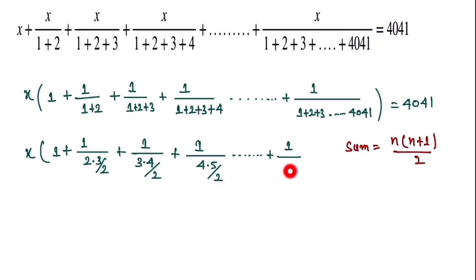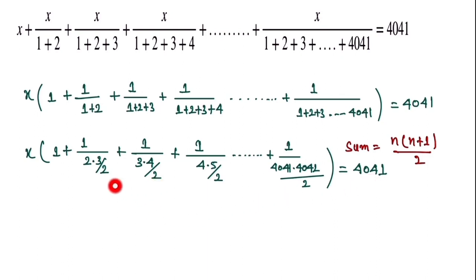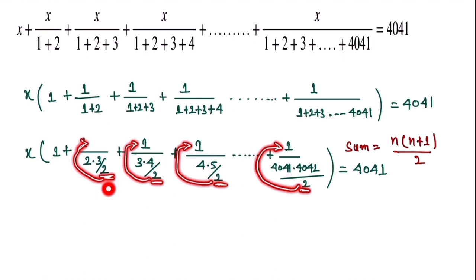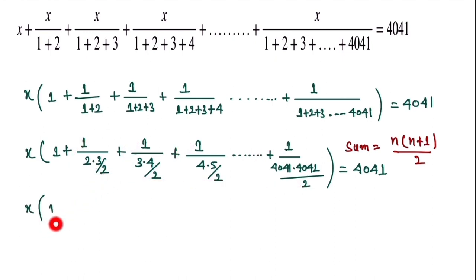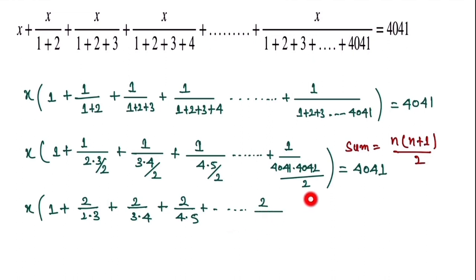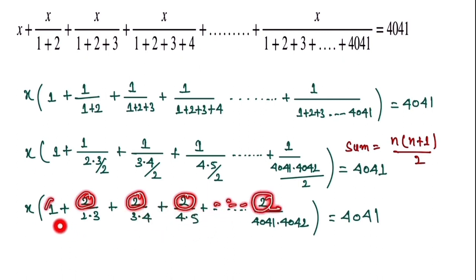The last term is 1/(4041·4042/2), since we apply n(n+1)/2 with n=4041. The factor of 2 appears in all denominators, so we bring the 2s upstairs. The equation becomes: x times (2/1 + 2/(2·3) + 2/(3·4) + 2/(4·5) + ... + 2/(4041·4042)) = 4041.